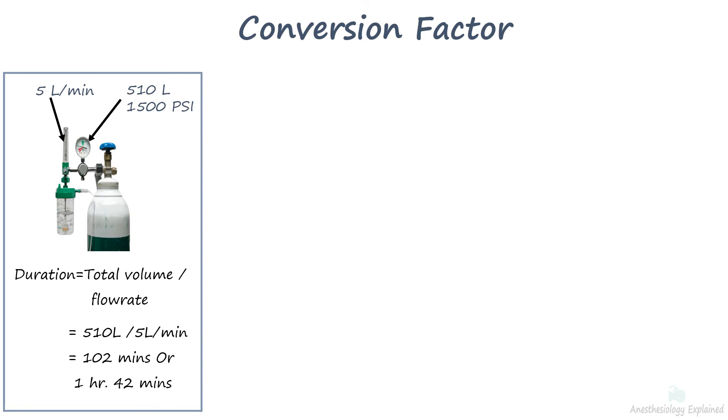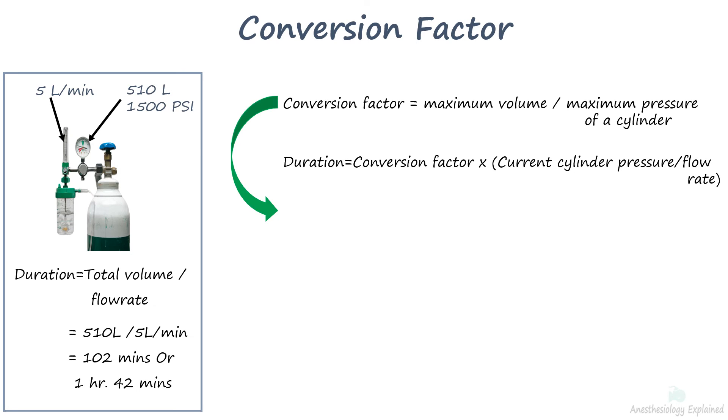There is however a better way to calculate the time a cylinder will last at certain flow rate. For this, we use conversion factor which is the maximum volume divided by maximum pressure of a cylinder. The formula to calculate the time a cylinder will last is by multiplying conversion factor and current cylinder pressure divided by flow rate. First, let's calculate the conversion factor taking maximum volume of a cylinder as 660 liters and maximum pressure or service pressure as 2000 psi. The factor we get is 0.33.